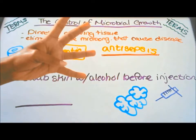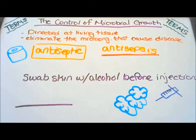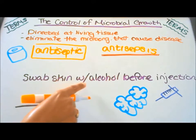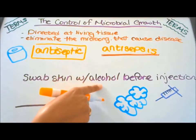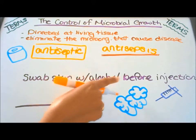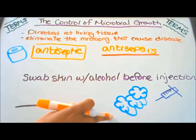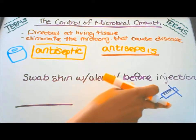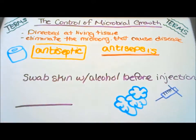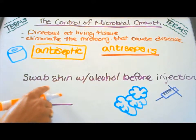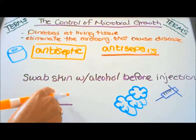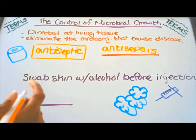Our fourth definition: swab skin with alcohol before injection. Here I have cotton balls and a needle to illustrate this. This is called de-germing.